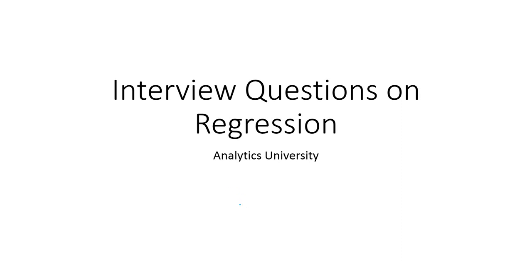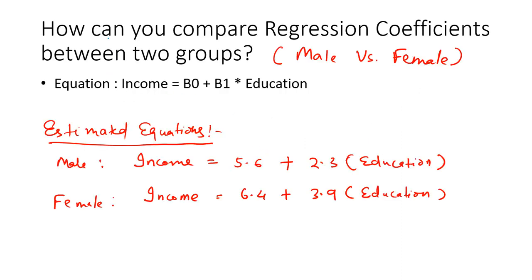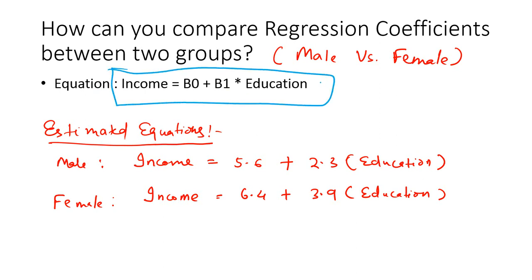In this video I am going to discuss a very important question on regression often asked in data analytics interviews. The question is: how can you compare the regression coefficients between two groups? The regression equation involves predicting income based on years of education, and we want to compare how the slope coefficient is different for male and female populations.